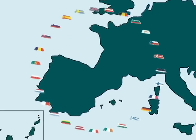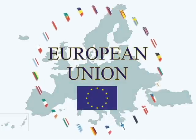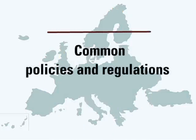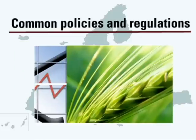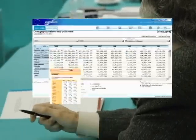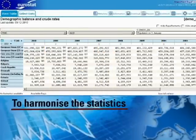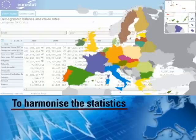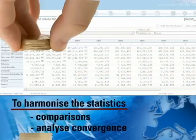Spain, along with other European countries, forms part of the European Union. It shares common policies and regulations in different areas such as economy, agriculture, security, etc. Those responsible for formulating the different policies use official statistics for decision making. It is important to harmonise the statistics of different countries in order to be able to draw comparisons between them and analyse convergence in topics such as income and the labour market.